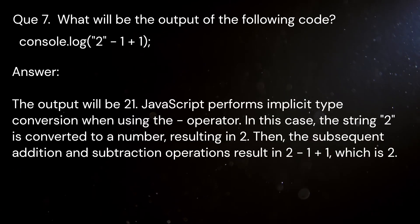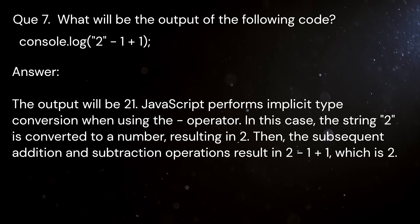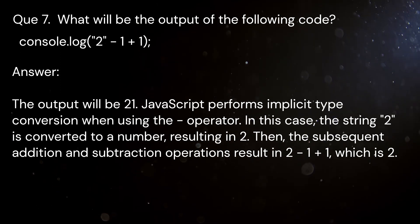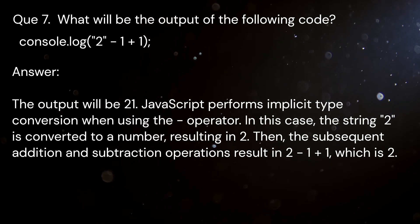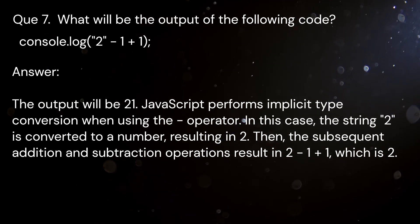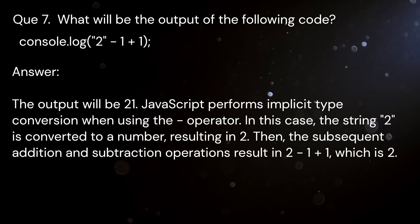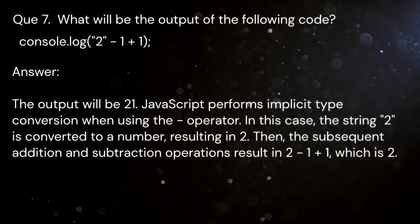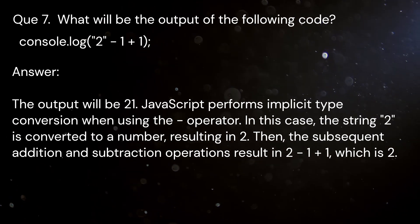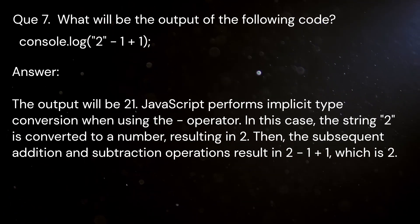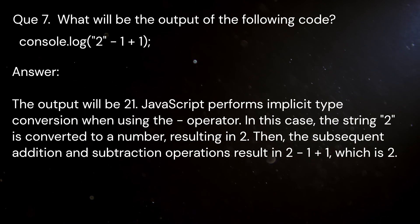Question 7: What will be the output of the following code? console.log('2' - 1 + 1). Answer: The output will be 2. JavaScript performs implicit type conversion when using the minus operator. In this case, the string '2' is converted to a number, resulting in 2. Then the subsequent addition and subtraction operations result in 2 - 1 + 1, which is 2.